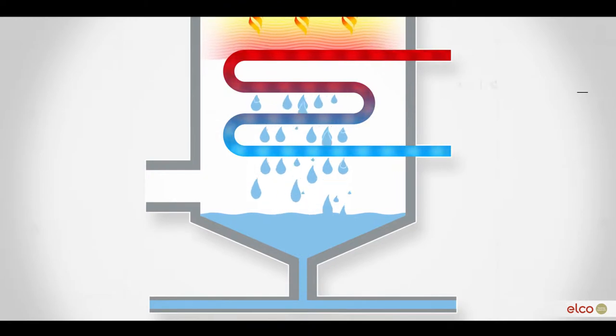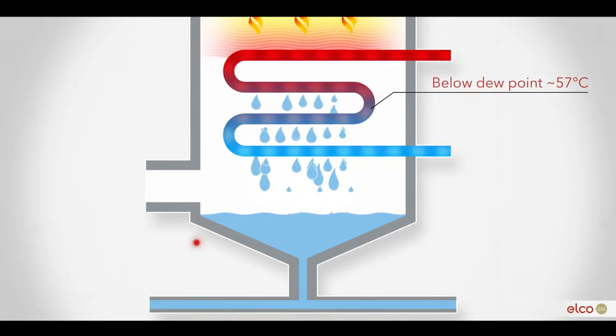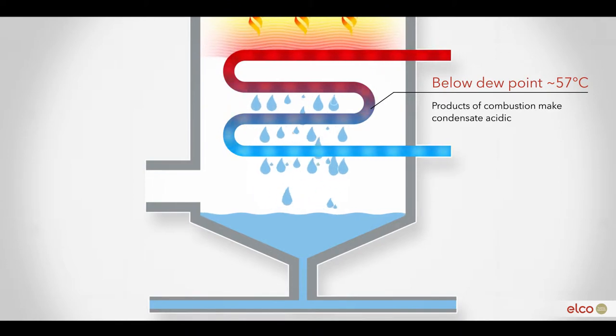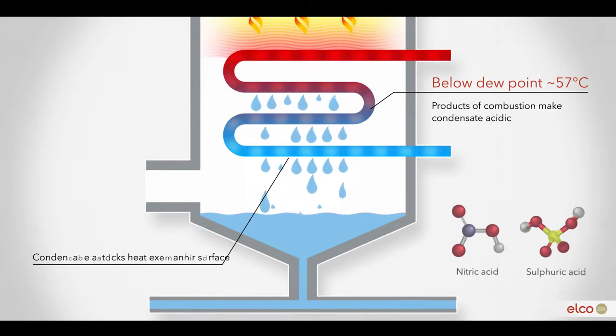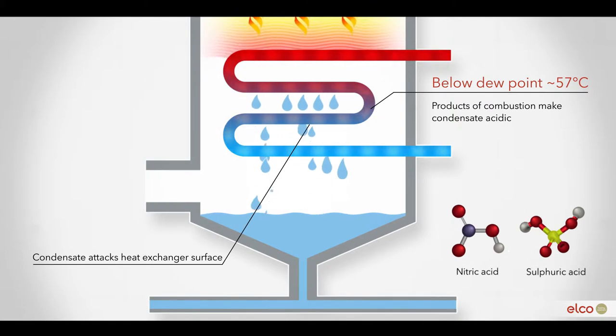But when the flue gases cool down further below the dew point of around 57 degrees Celsius and condensate forms, the products of combustion make the condensate acidic. This condensate attacks the heat exchanger's surface.